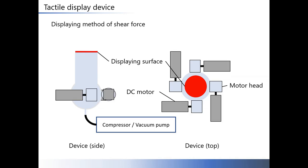This slide shows how to display shear force. The display equips four motors as shown in the figure. This part is composed with a cylinder and a sphere. Moving the sphere by using four motors generates shear force. By controlling four motors movements, it is possible to display shear force in arbitrary magnitude and direction.